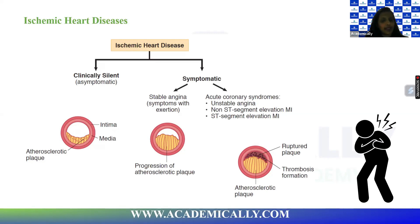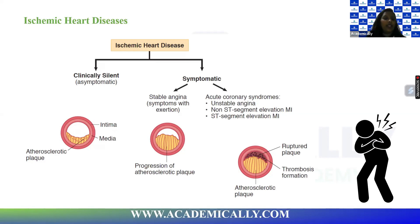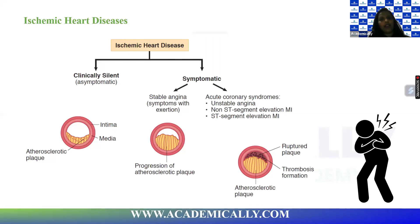Acute coronary syndrome is classified into three types: unstable angina, non-ST elevation MI (NSTEMI), and ST elevation MI (STEMI). The atherosclerotic plaque actually ruptures and thrombosis forms, causing reduced blood supply to the heart muscle, which then becomes weaker. How do you differentiate unstable angina, NSTEMI, and STEMI from each other?